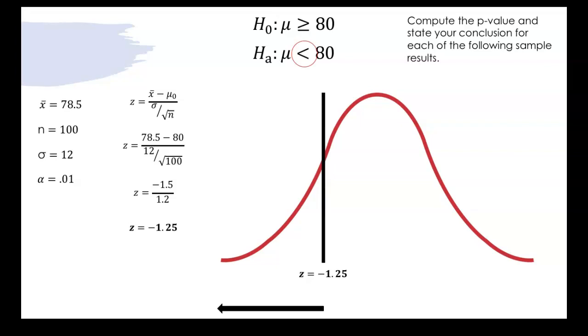So when we look up our z-score of negative 1.25 in our table we will find the area to the left of that z-score and that area becomes 0.1056 and that 0.1056 is your p-value.